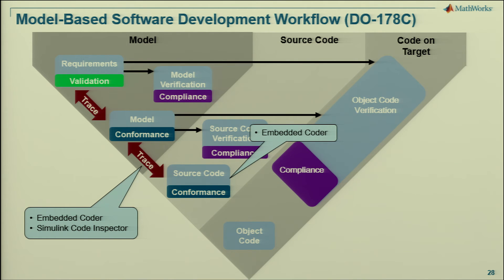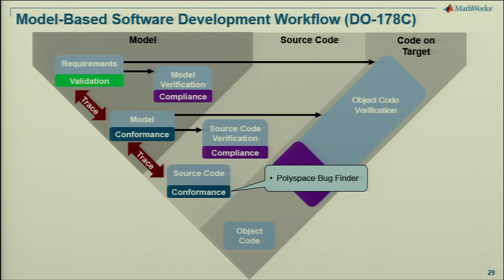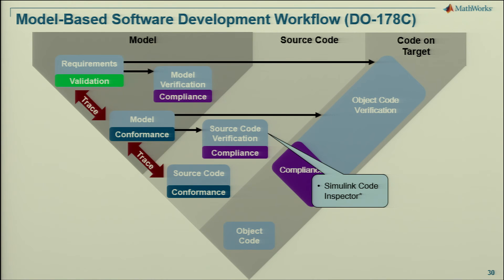Something to emphasize: all of that has been at the model level. Before you even generate code, you're able to figure out any issues very early in the process. When you do go to generate your code, because you want to get credit for a lot of the things you do at the model level, the Simulink Code Inspector is going to allow you to show basically equivalence between the model and the source code so that you can get credit for verification at that point. We also have static analysis — Bug Finder — for conformance and code compliance.